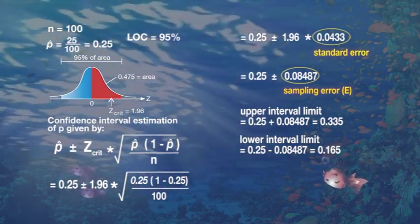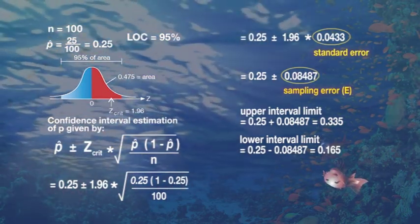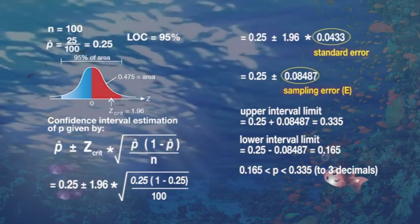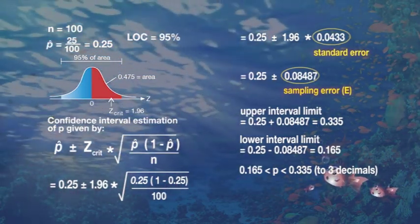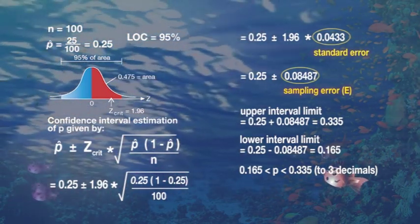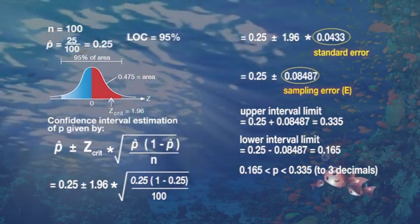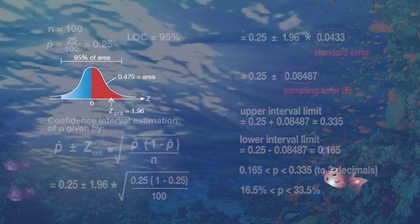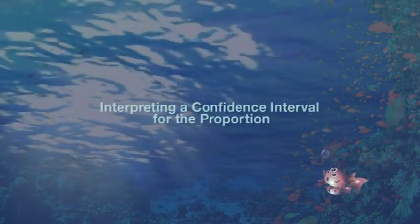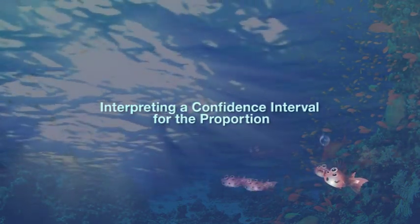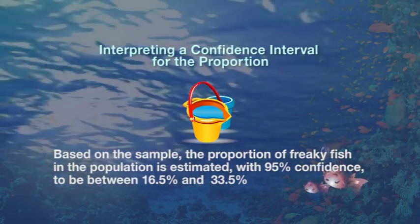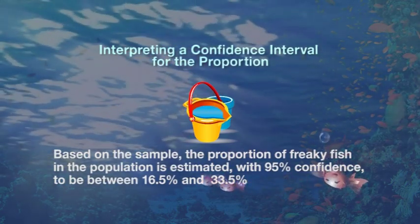We can calculate the upper limit of our confidence interval by taking 0.25 and adding the sampling error, and the lower limit by taking 0.25 minus the sampling error, giving us 0.335 and 0.165. Therefore we can write down the confidence interval for the population proportion as this. Be careful to calculate to three decimal places, using many decimal places in the standard error and rounding only at the end. Alternatively, we can write the confidence interval as a percentage: 16.5% to 33.5%.